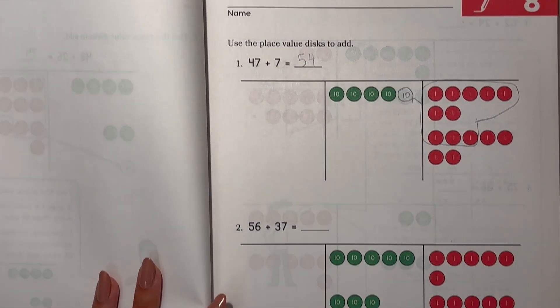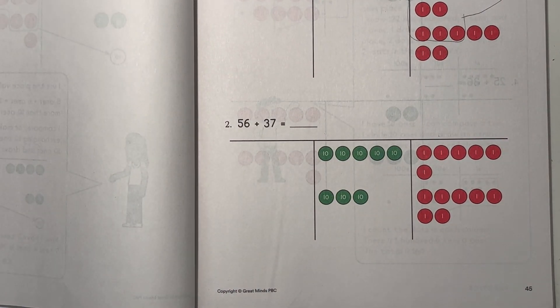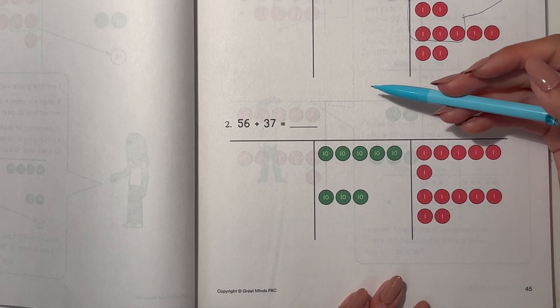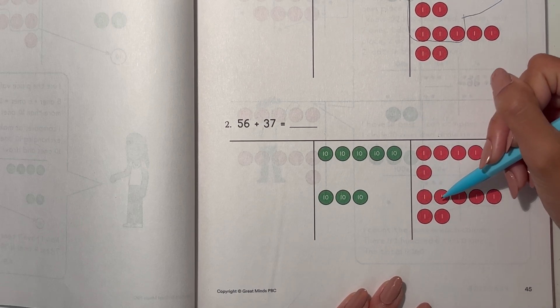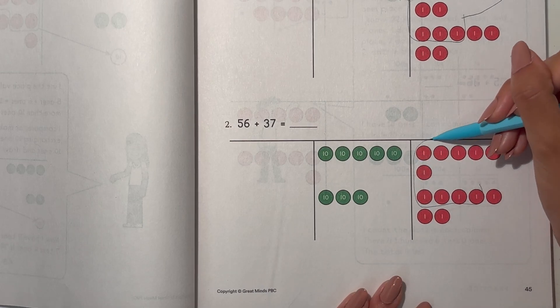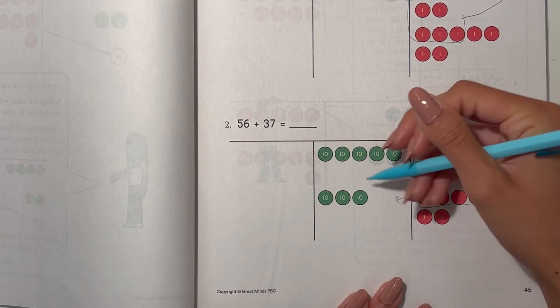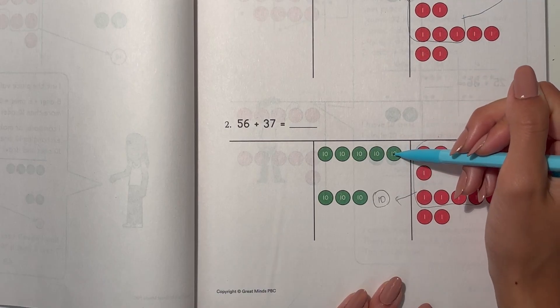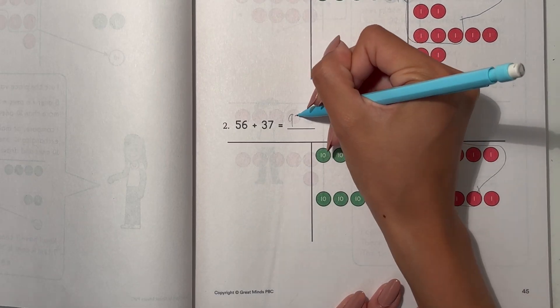Okay, now number 2, 56 plus 37. So we have 6, 7, 8, 9, 10. Take this and regroup to 1 ten. So now we have 9 tens and 3 ones, 93.